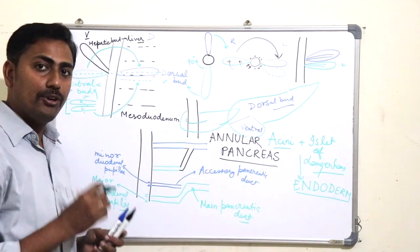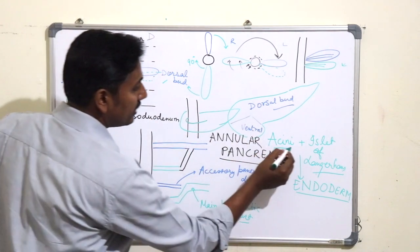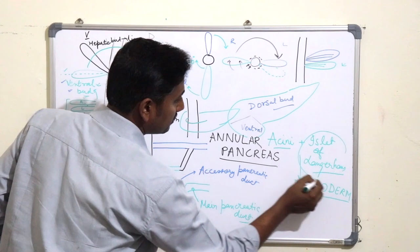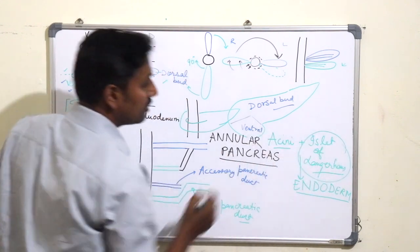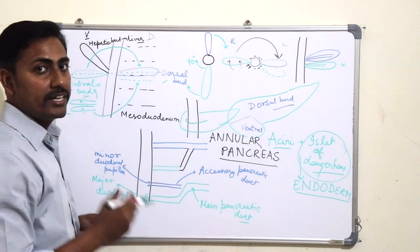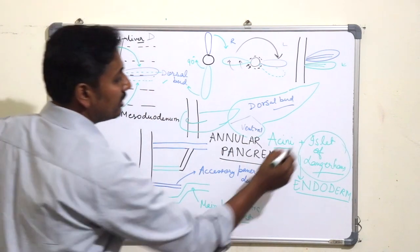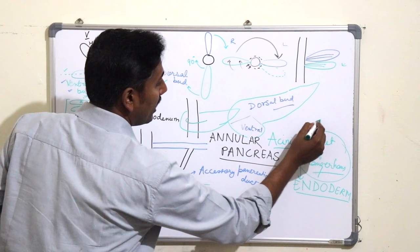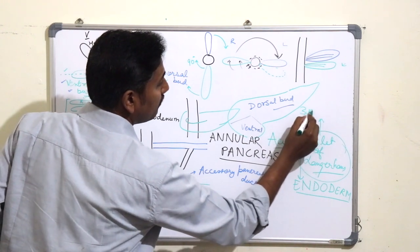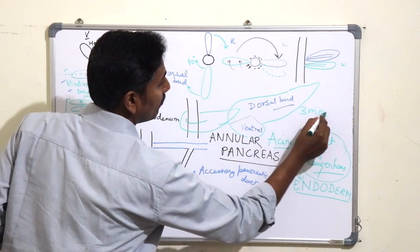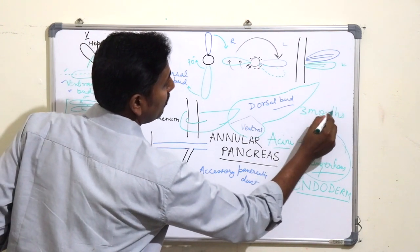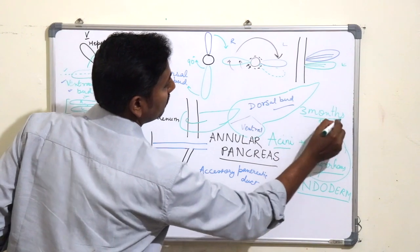A note to remember: the islets of the pancreas will start secreting insulin at approximately three months of fetal life, or intrauterine life.